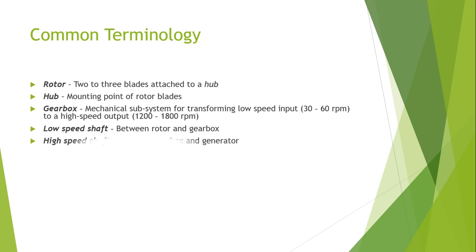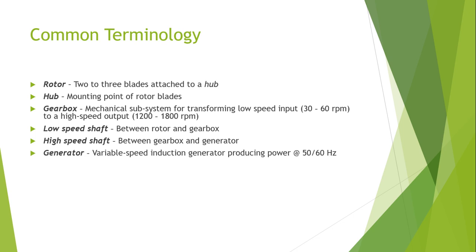There is a low-speed shaft between the rotor and the gearbox, which is basically used as a connector. Then there is the high-speed shaft, which is used to connect the gearbox and the generator.